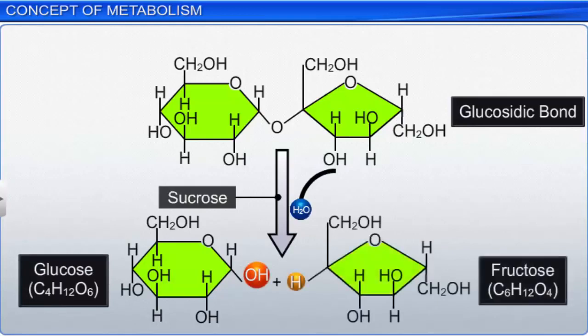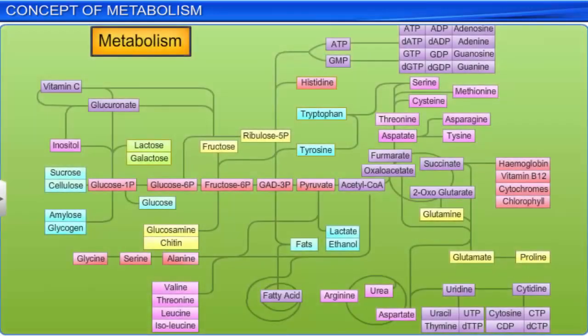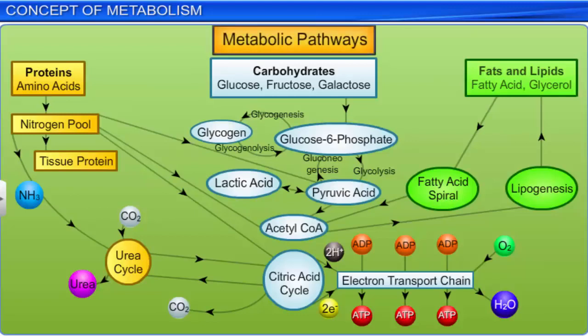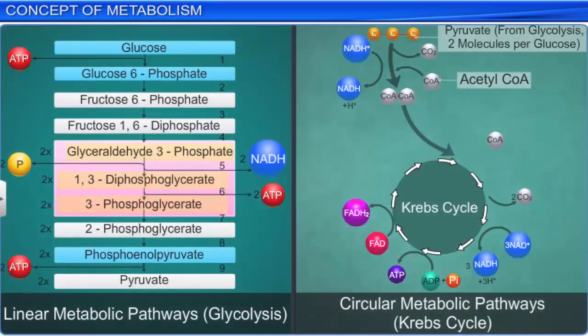Most of these reactions do not occur in isolation, and are usually linked to other reactions. In fact, the series of linked chemical reactions that transforms biomolecules is called metabolic pathways. These pathways take a specific path and include specific biomolecules. They can be either linear, as in the process of glycolysis, or circular, as in the Krebs cycle.